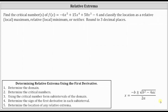We're asked to find the critical numbers of f of x, which is a degree five polynomial, and classify the location as a relative or local maximum, relative or local minimum, or neither, and we're told to round to three decimal places.